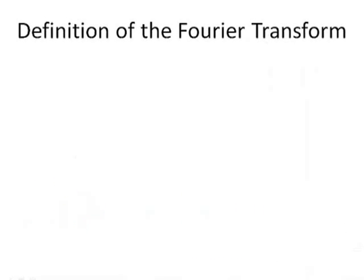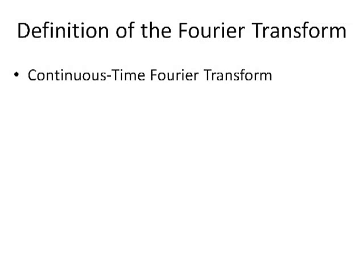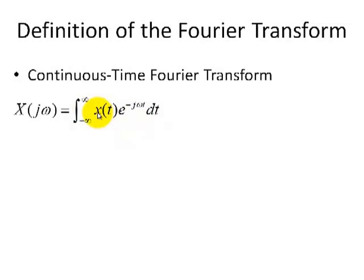Before we go into the actual mechanics of doing the Fourier transform of an exponential, let's review the definition of the Fourier transform. For a continuous-time Fourier transform, we have the following mathematical relationship in which we take a signal or function in time and we multiply it by a complex exponential, summing or doing an integral from minus infinity to infinity, integrating with respect to time.